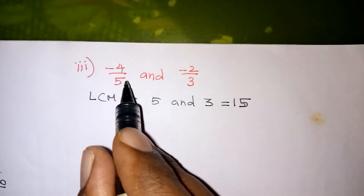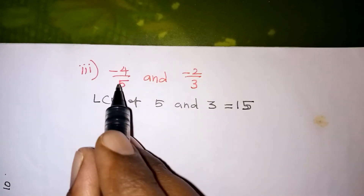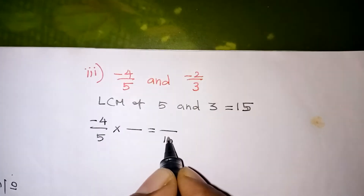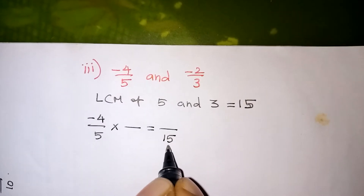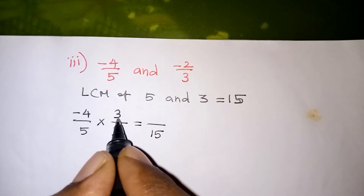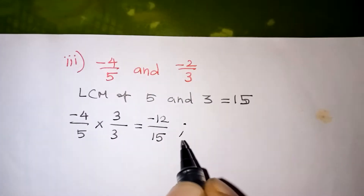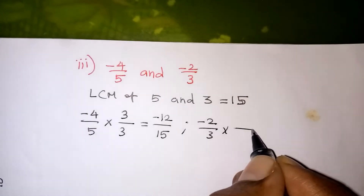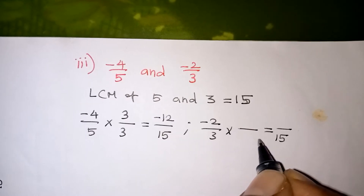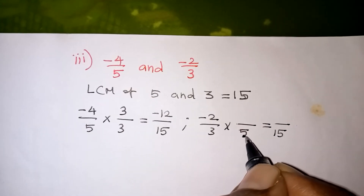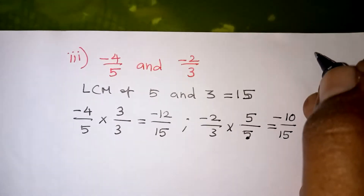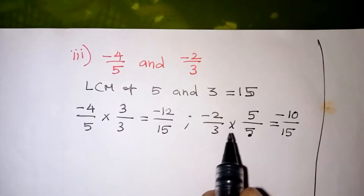Both fractions should be converted to have a denominator of 15. For the first number, minus 4 by 5: we ask what number multiplied by 5 gives 15 — that is 3. So we multiply numerator and denominator by 3, giving minus 12 by 15. For the second number, minus 2 by 3: we ask what number multiplied by 3 gives 15 — that is 5. Multiplying numerator and denominator by 5 gives minus 10 by 15. So we now have minus 12 by 15 and minus 10 by 15.